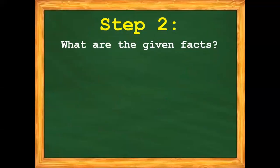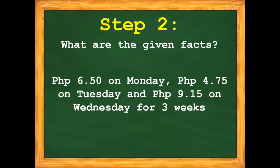Next, step number 2: what are the given facts in the given problem? P6.50 on Monday, P4.75 on Tuesday, and P9.50 on Wednesday for three weeks. And P120.35.